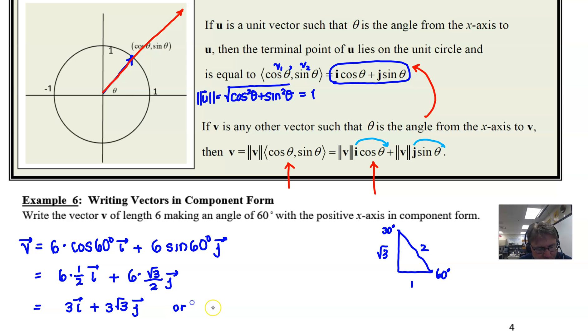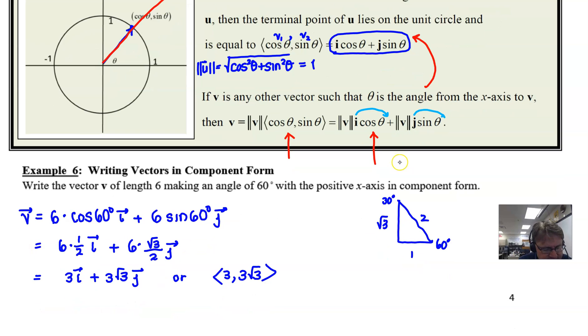Now, if we wrote it in our normal component form using vector brackets, it's perfectly fine. We could call it this. But like I said, you're going to find more often than not in application problems, this will be the more commonly way that these vectors are expressed.